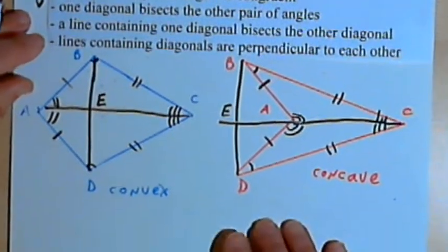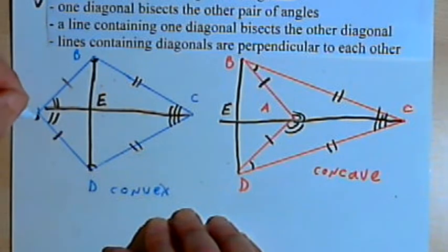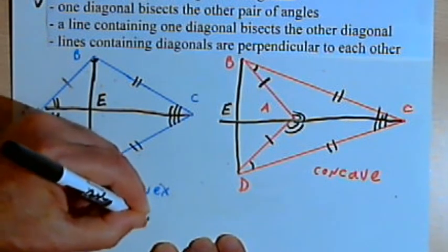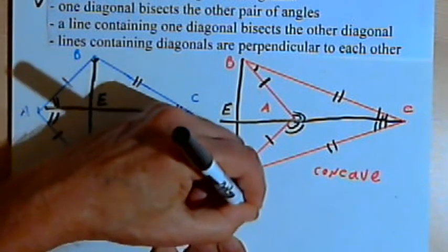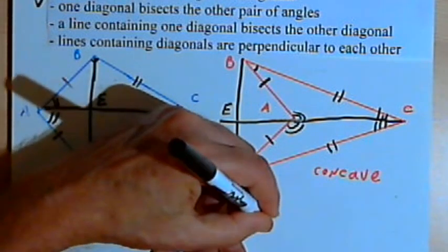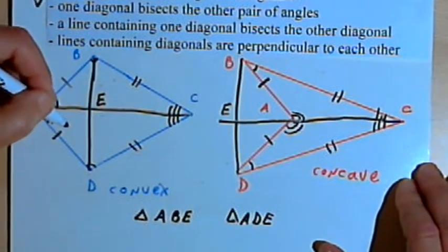Now let's take that point of intersection in both cases and label it. We'll call it E. And now I want to look at triangle ABE and triangle ADE in both cases. So I've got triangle ABE and triangle ADE, and see if we can prove that they're congruent triangles.